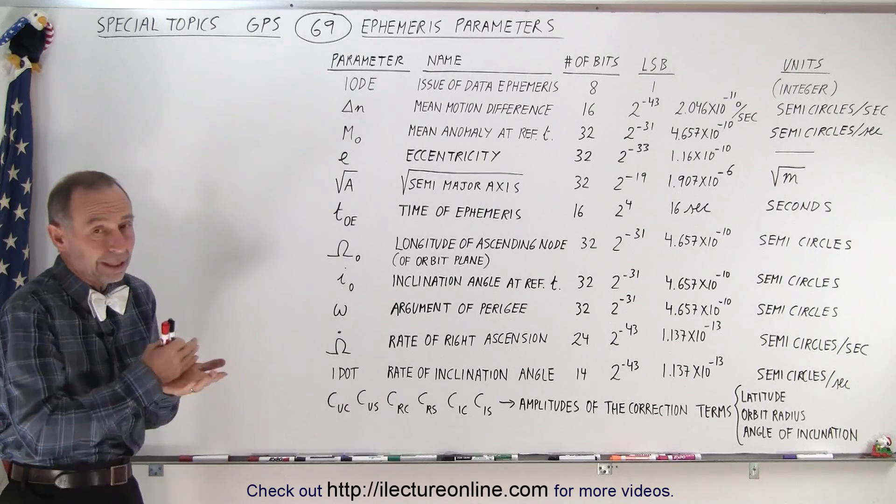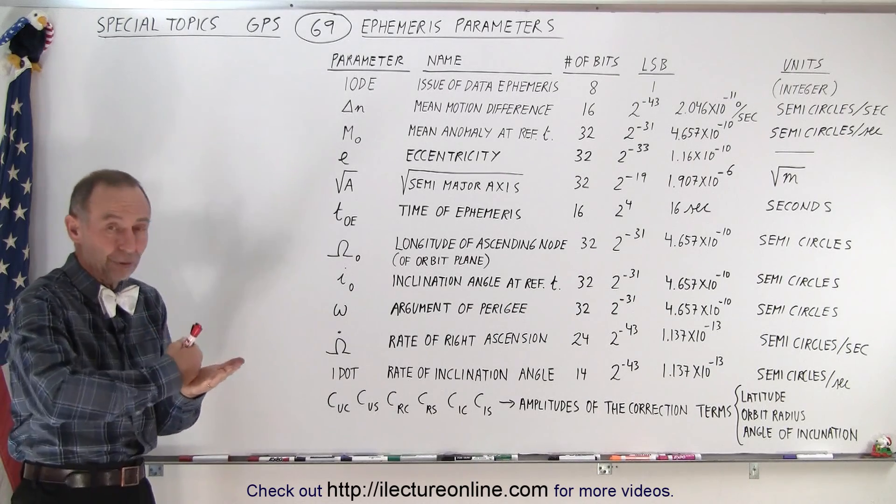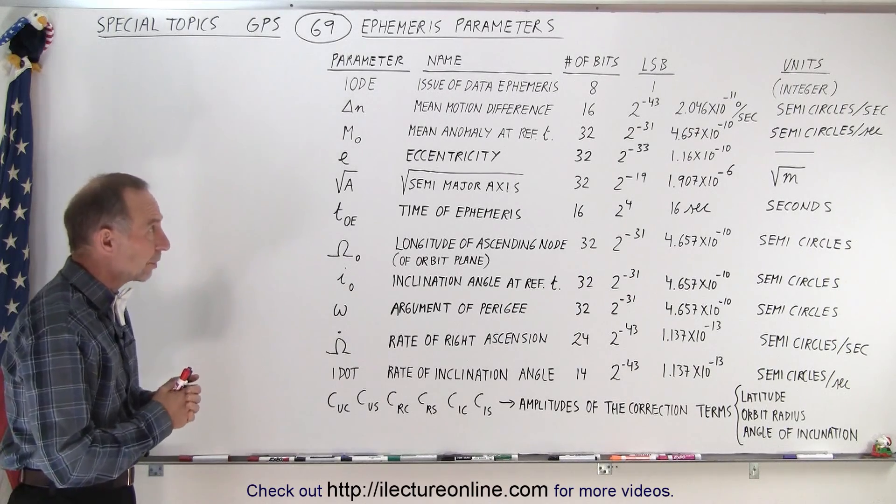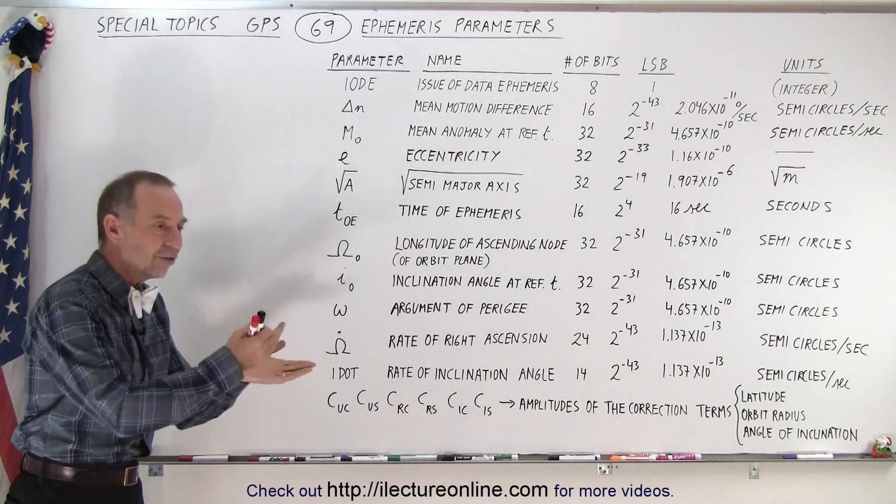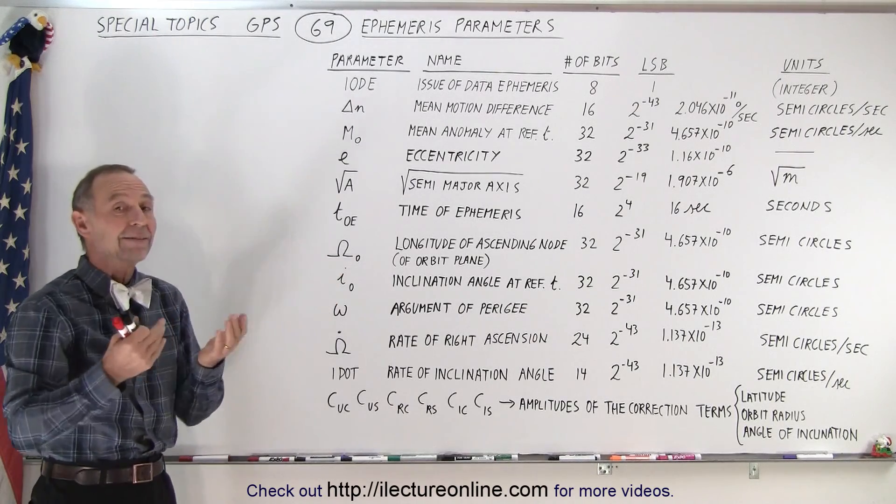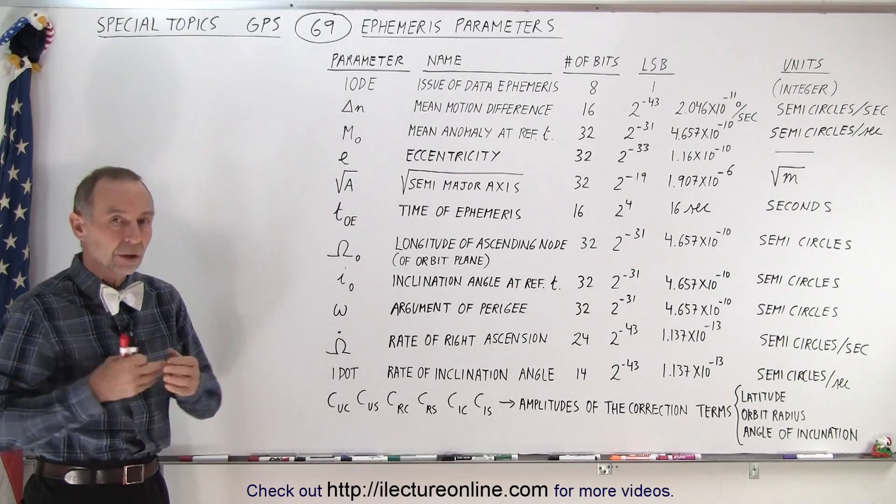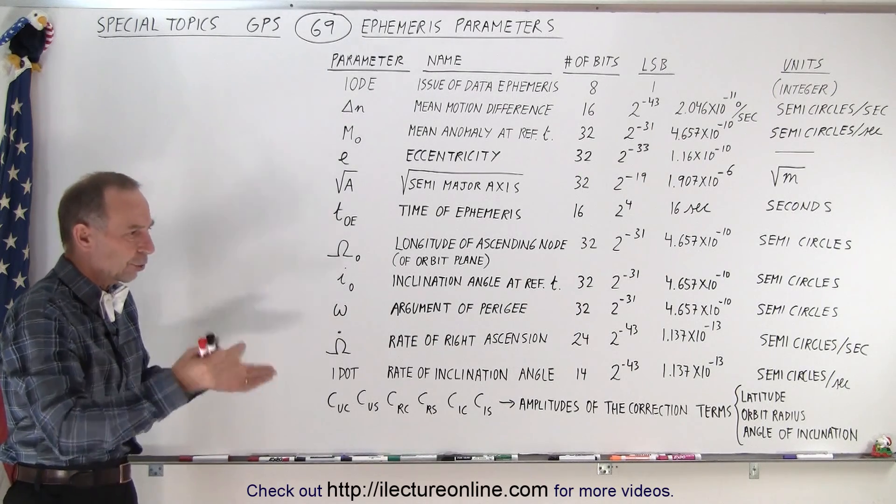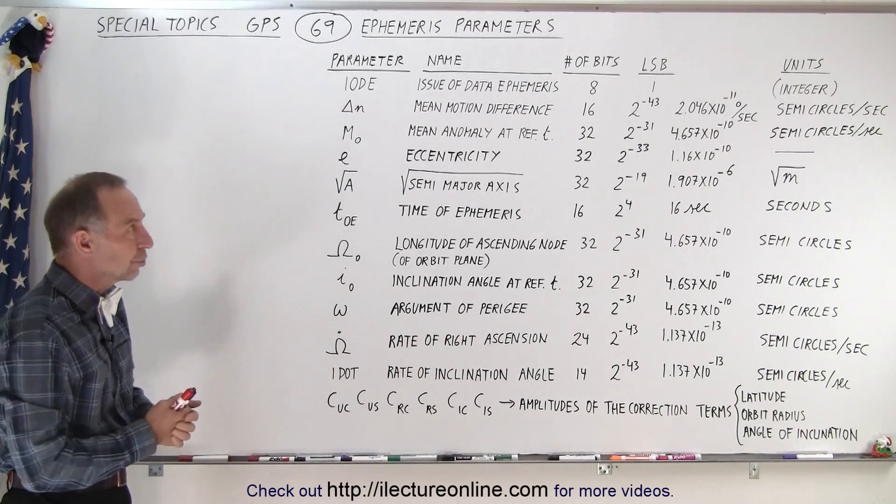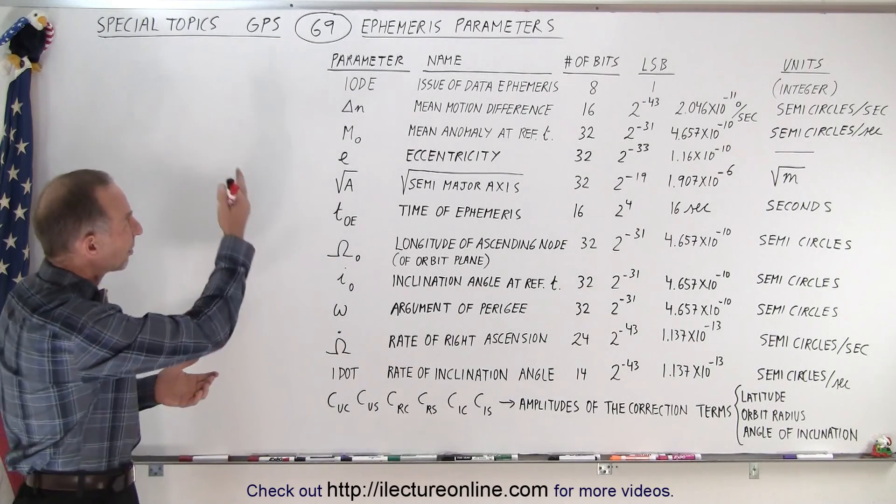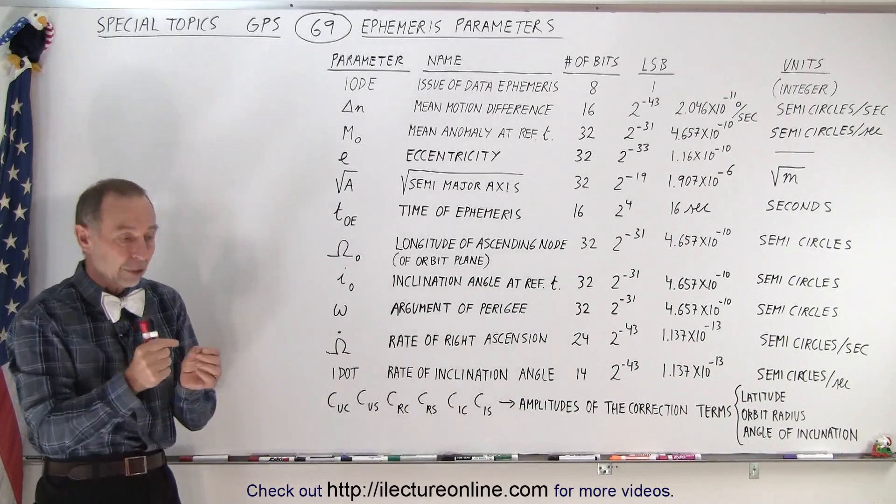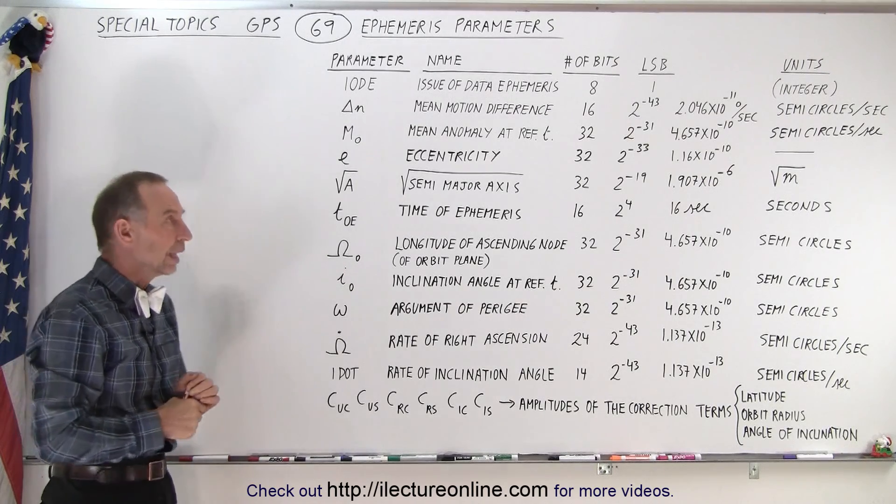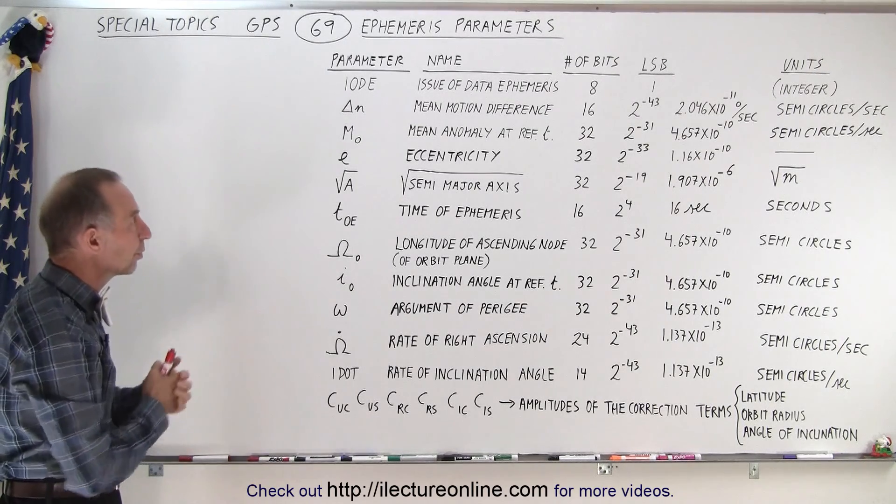The next day we get the next set of 6 sets of 4 hours and so forth. We also send additional sets for additional days in case we cannot transmit new ephemeris data, so the satellite will have ephemeris data stored up for upwards of about 72 days if necessary. We need an IODE to indicate which data set we're using and receiving.